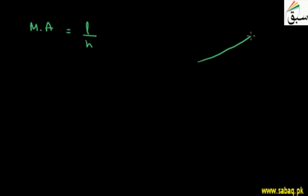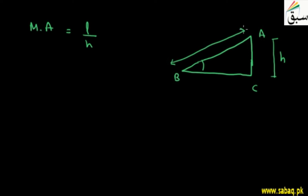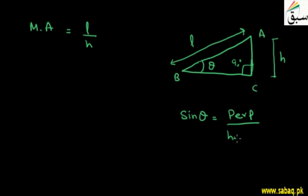If I draw the inclined plane again — we have triangle with points B, A, and C — the distance from A to C is H and the distance from A to B is L. The angle at B is theta, and the angle at C is 90 degrees, so this is always a right-angle triangle. Applying the trigonometric ratio, sin θ equals perpendicular upon hypotenuse, which is H upon L. Therefore the mechanical advantage, which is L upon H, equals 1 upon sin θ.